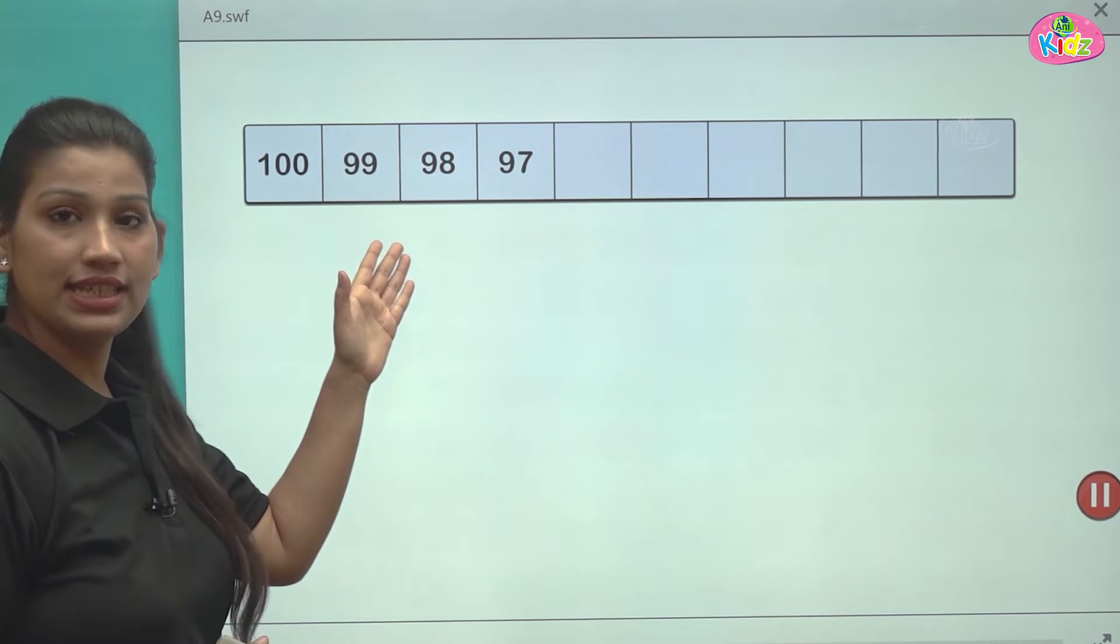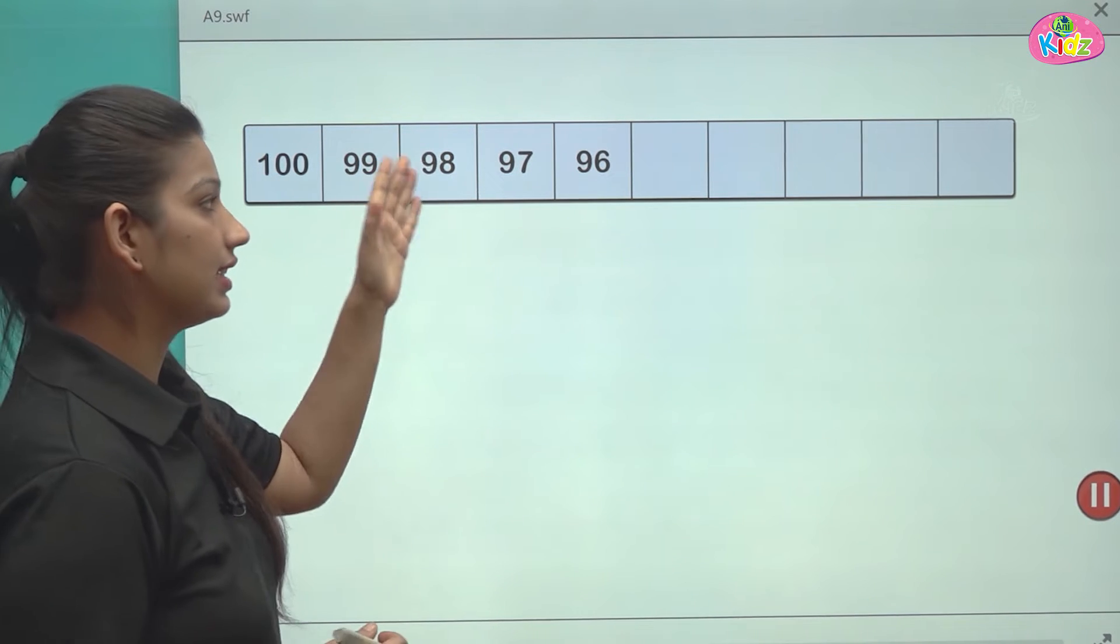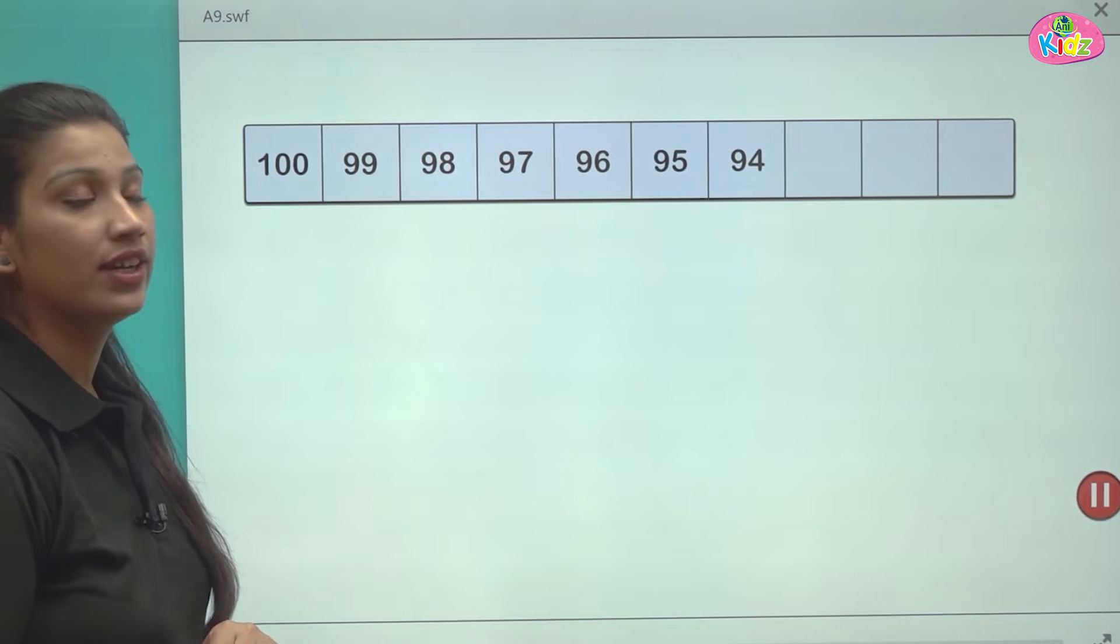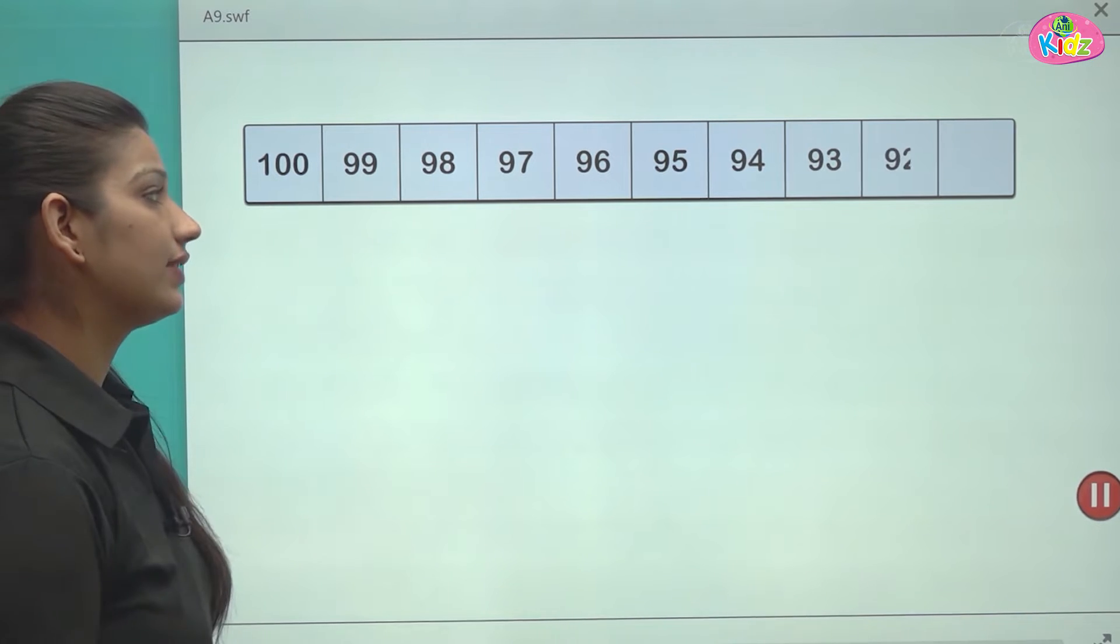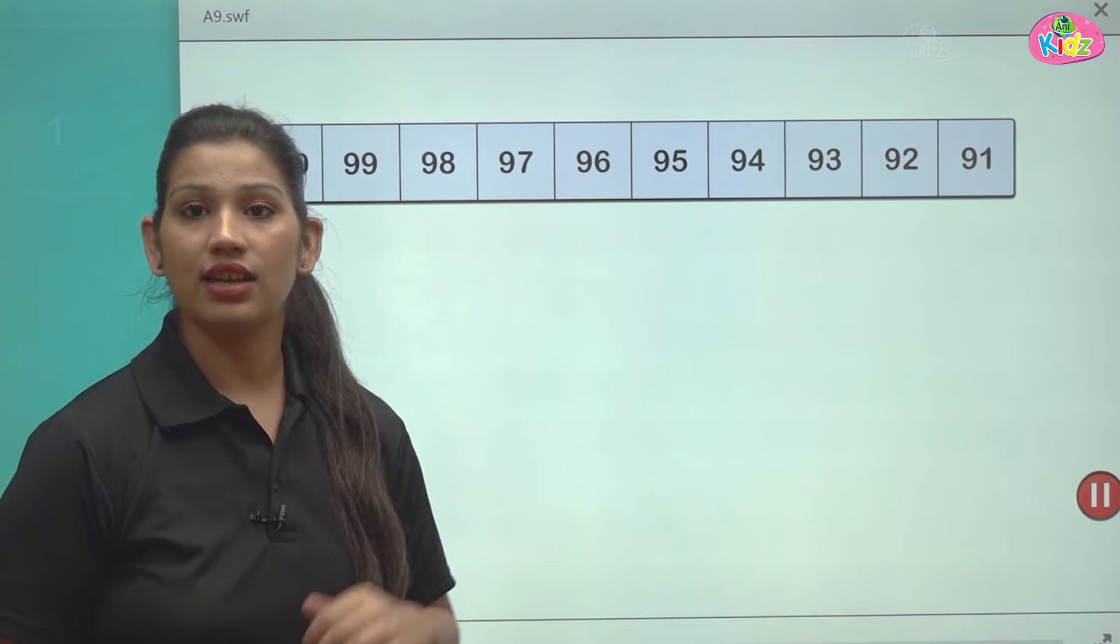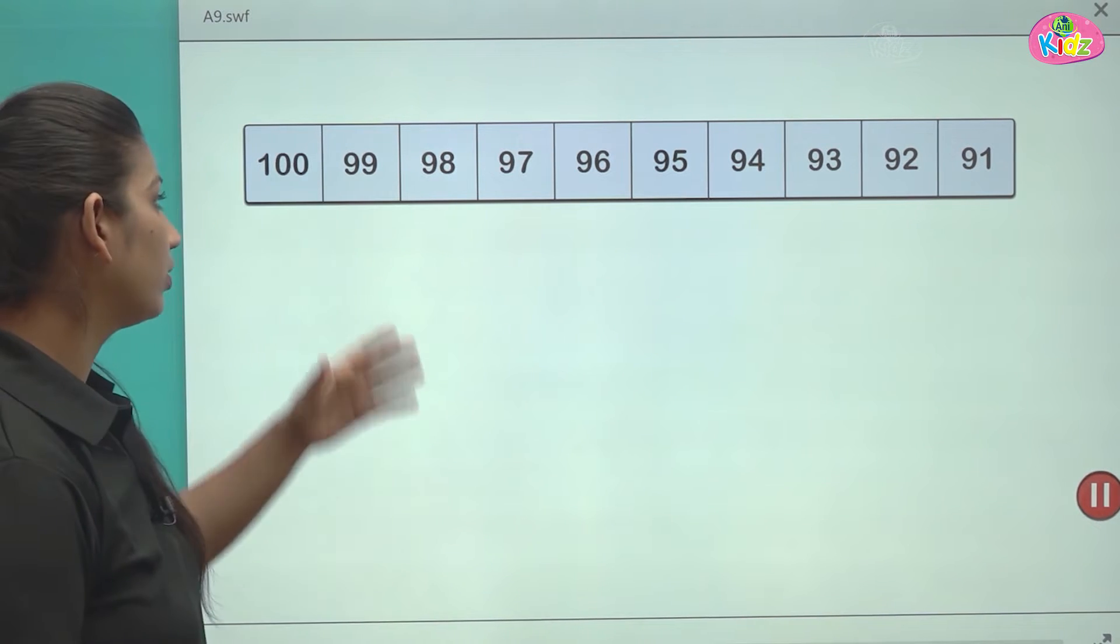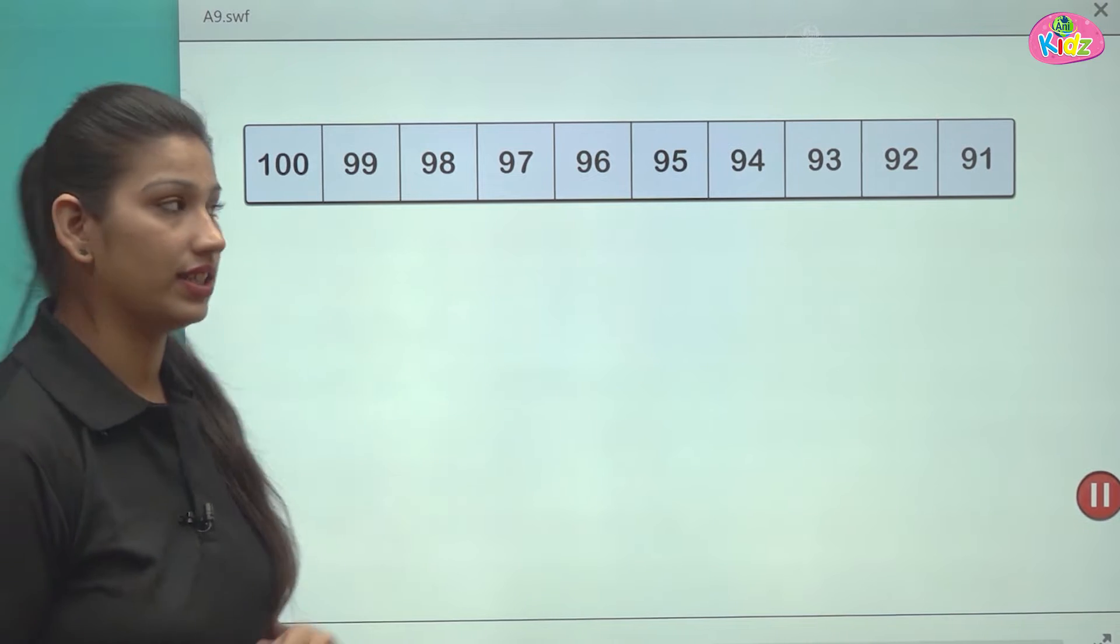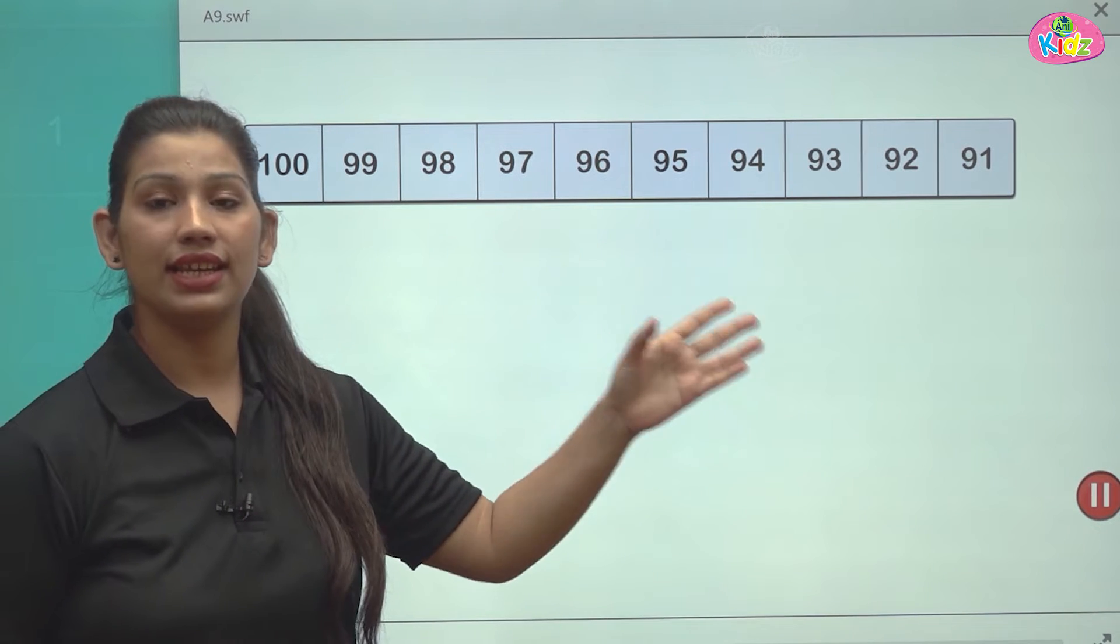100, 99, 98, 97, 96, 95, 94, 93, 92 and 91. This is a number line and we have the biggest number as 100 till number 91.